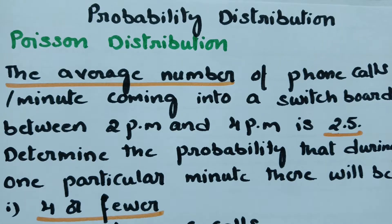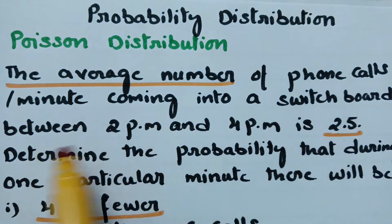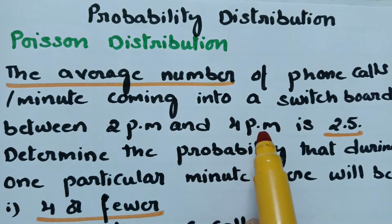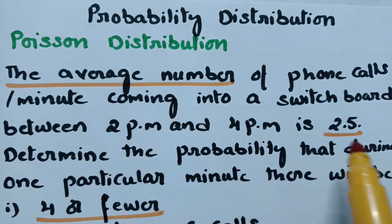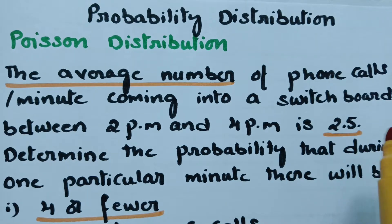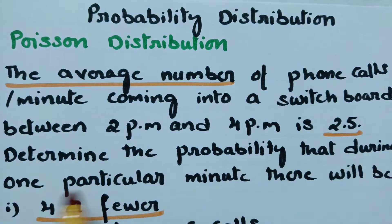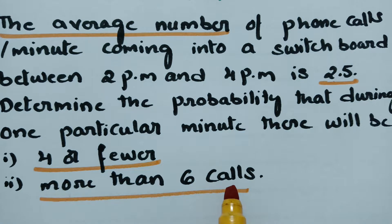This video is on Poisson distribution. The problem is: the average number of phone calls per minute coming into a switchboard between 2 p.m. and 4 p.m. is 2.5. We have to determine the probability that during one particular minute there will be four or fewer calls, and next, more than six calls.